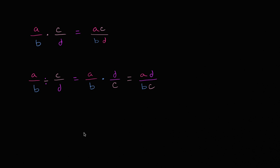Now let's do one that's maybe a little bit more involved and see if you can pull it off. So let's say that I had one over a minus one over b, all of that over c. And let's also divide that by one over d.